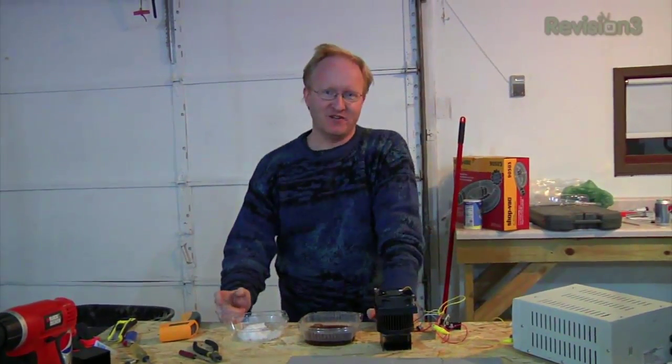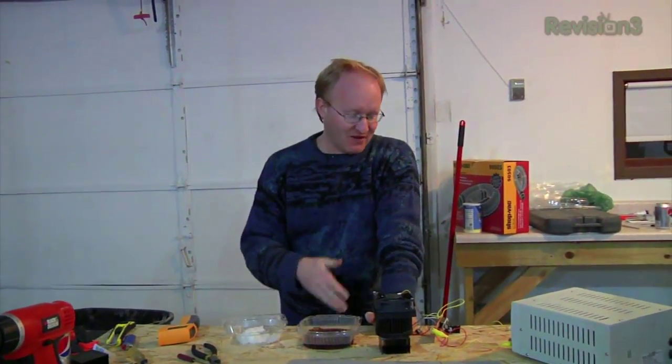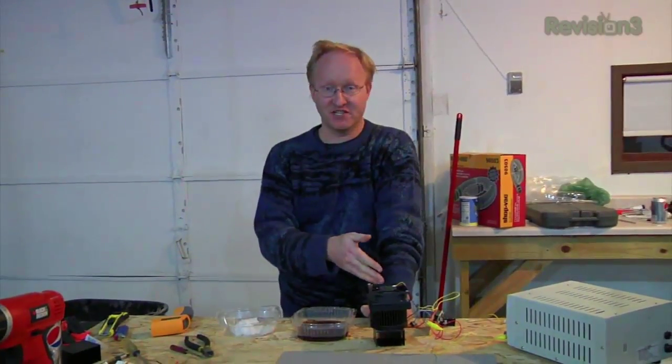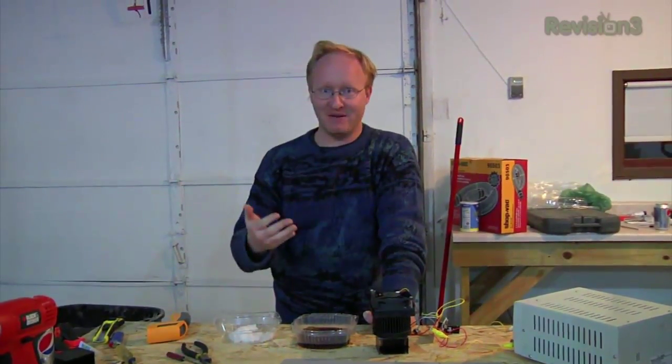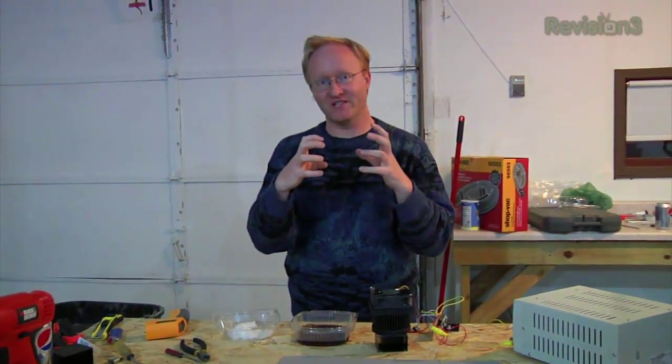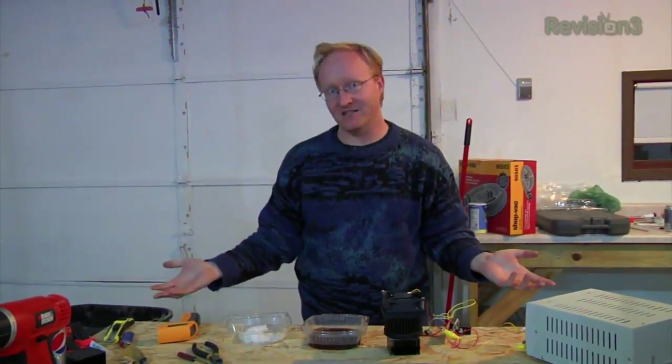So we've shown how we can use a Peltier to cool something and we've also shown how a microprocessor such as the Arduino can be used to control that cooling using a temperature sensor and a MOSFET to start it and stop it. In the next section, we'll build the actual physical can cooler itself and make it look like some sort of product.